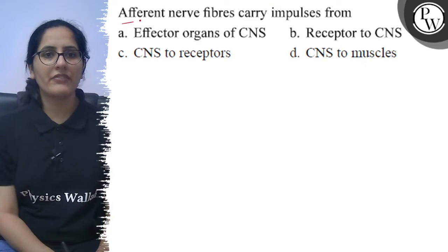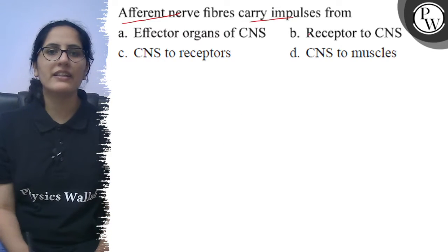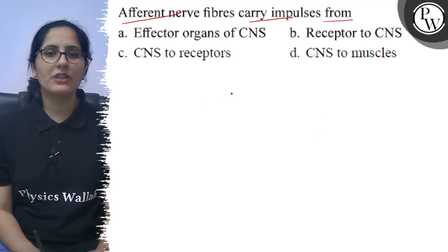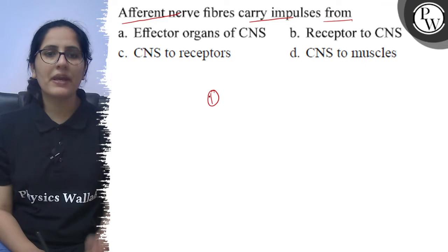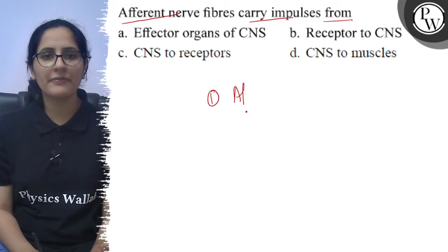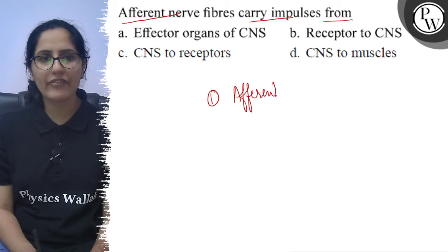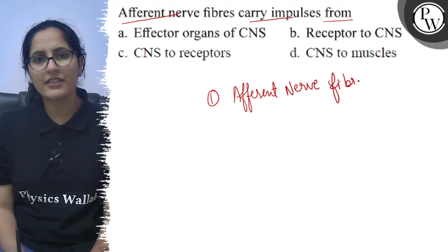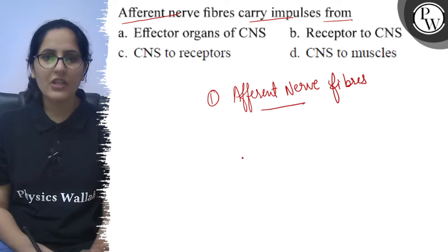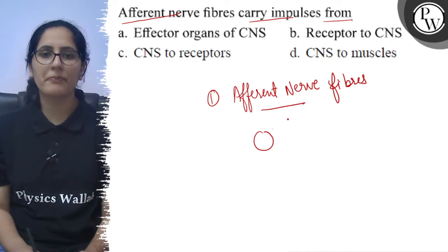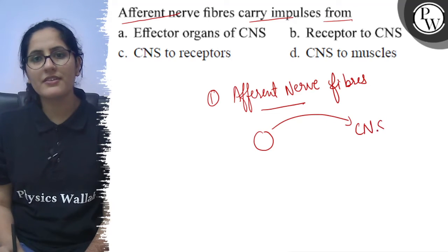Which afferent nerve fibers carry impulses? So there are two types of nerve fibers in the PNS or peripheral nervous system. One is called afferent nerve fibers, that is the sensory neurons, which carry impulses from target organ, tissue or receptor to the central nervous system.